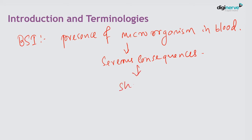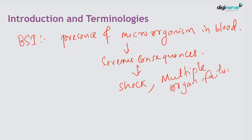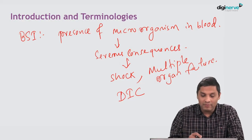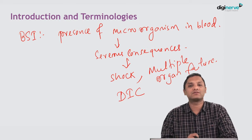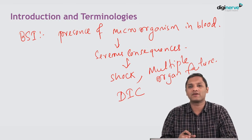Presence of organisms in blood can lead to shock — hypovolemic shock — and various organs will be affected, so multi-organ failure can take place. Disseminated intravascular coagulation can also be a complication following bloodstream infection. Bloodstream infections represent a group of infections which are extremely serious and must be dealt with meticulously, otherwise they lead to serious consequences.